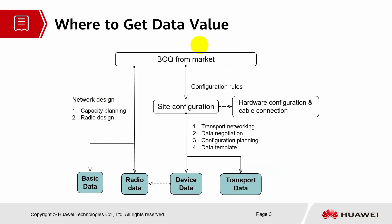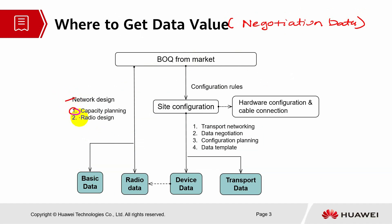Where to get the data value? This is more related to the negotiation data. We have to collect some data or prepare some information before we start configuring the script. We need network design information such as capacity planning and radio design — this will help with basic data and radio data. We also need to know the site configuration, hardware configuration, cable connection, transport networking, data negotiation, configuration planning, and data templates. These will help with device data and transport data.